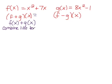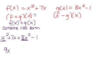Like terms have the same variables and same exponents. So we have x squared plus 7x plus 8x squared minus 1. x squared and 8x squared are like terms — they have the same variables with the same exponents — so this becomes 9x squared.